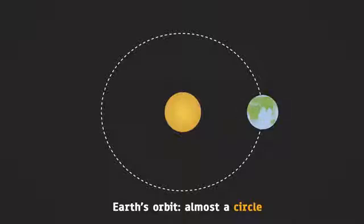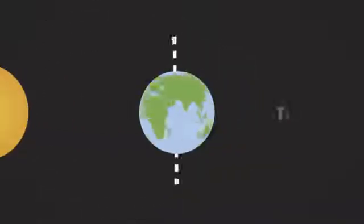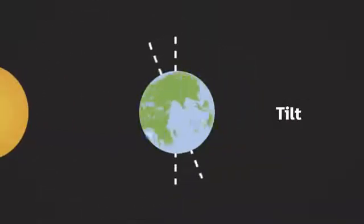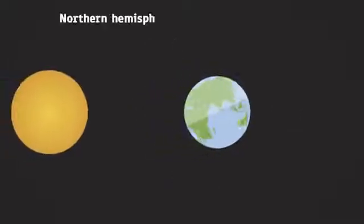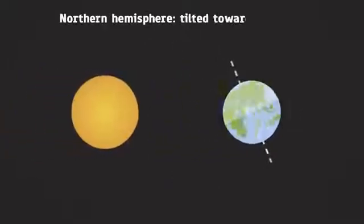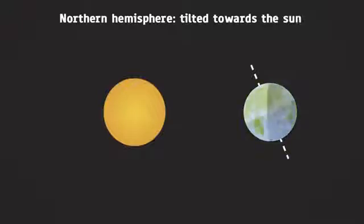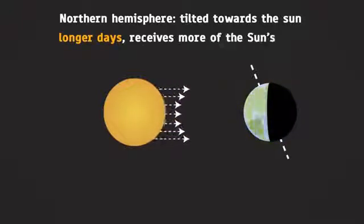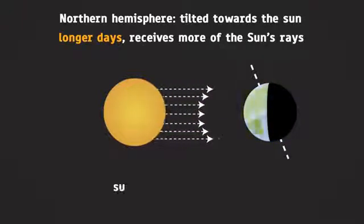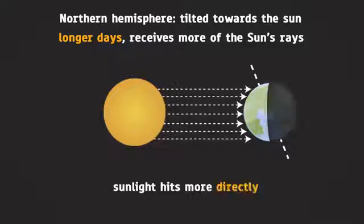The real cause of seasons is the tilt of Earth's rotational axis relative to the plane of revolution. When the northern hemisphere is tilted towards the Sun, it has longer days, receives more of the Sun's rays, and the sunlight hits more directly.